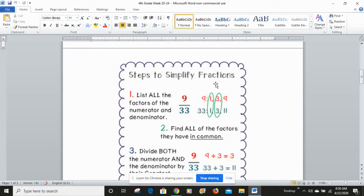It says steps to simplifying fractions. List all the factors of the numerator and the denominator. So for the number 9/33, the factors are 1, 3, and 9.